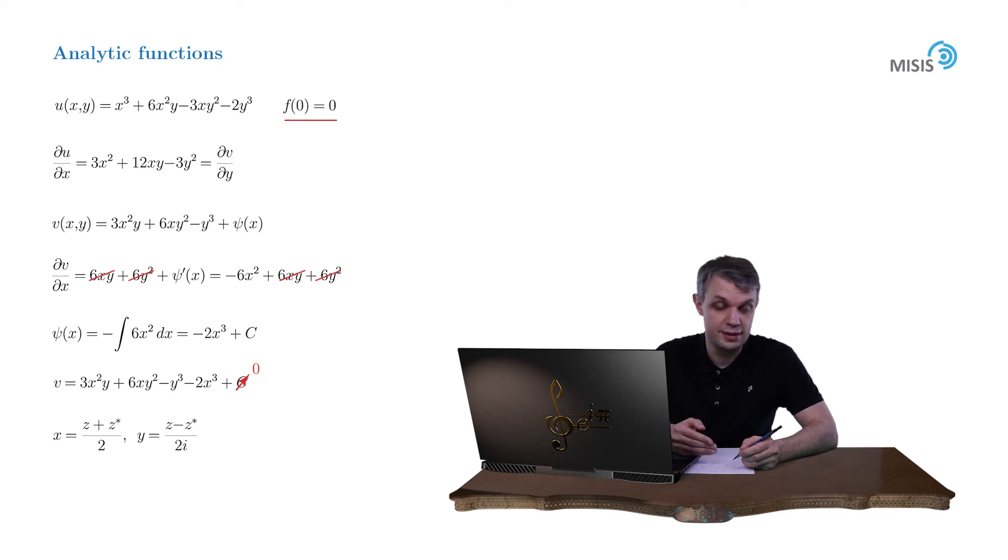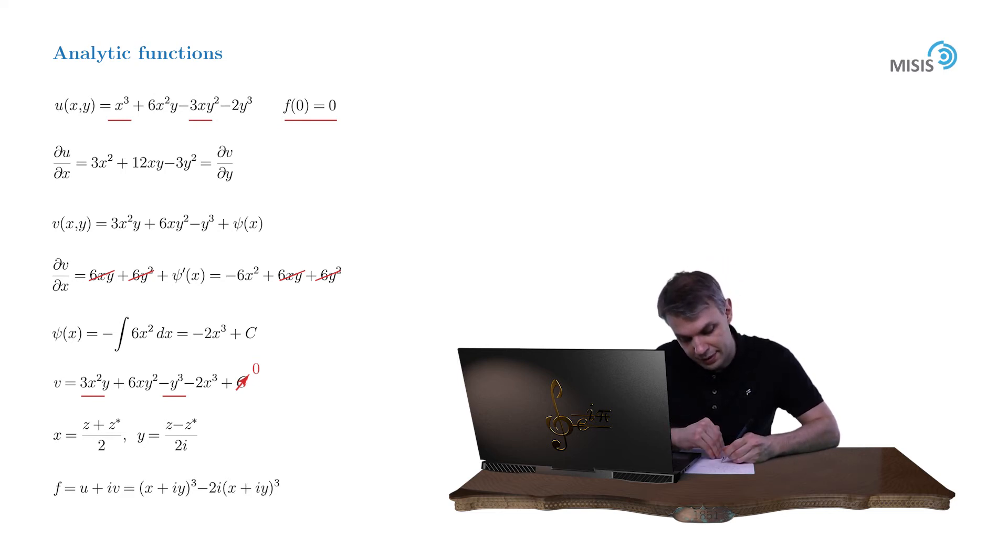But in this particular case you may guess the appearance of your analytic function just combining different terms in u and v. For example, combining x cubed and minus 3xy squared in u function and 3x squared y and minus y cubed in v function, we see that u plus iv can be organized into x plus iy cubed. And now you can factor out minus 2i from the rest of the terms. And you will immediately notice that the rest of the terms are again organized into x plus iy cubed. So in the end our analytic function can be recast as z cubed times 1 minus 2i.